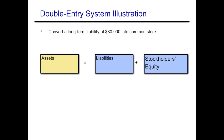Example seven: convert a long-term liability of $80,000 into common stock. Instead of paying the creditor back in cash, we're giving them part ownership in the business. Our debt is going down and ownership in the company is increasing. Liabilities decrease by $80,000 and stockholders' equity increases by $80,000, keeping the accounting equation in balance.